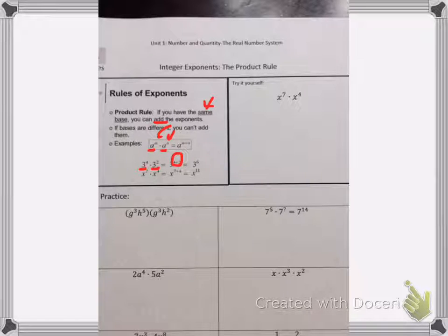So coming over here to try it yourself, you have x to the seventh times x to the fourth. What that really means, because those bases are the same, is that you can take those powers of seven and four and add them together to get x to the eleventh.